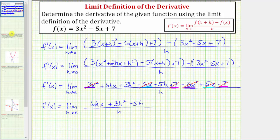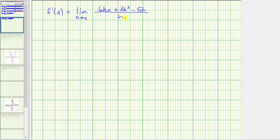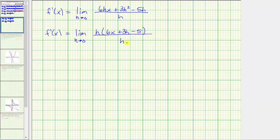Notice how we still have the issue of division by zero if we try to perform direct substitution. But now notice in the numerator, all the terms have a common factor of h. So we'll factor h out of the numerator and then simplify this quotient. If we factor h out of the numerator, we would have h times the quantity six x plus three h minus five. Notice here we have h over h, which simplifies to one. So now we just have the limit as h approaches zero of the quantity six x plus three h minus five. The only term affected by h now is three h.